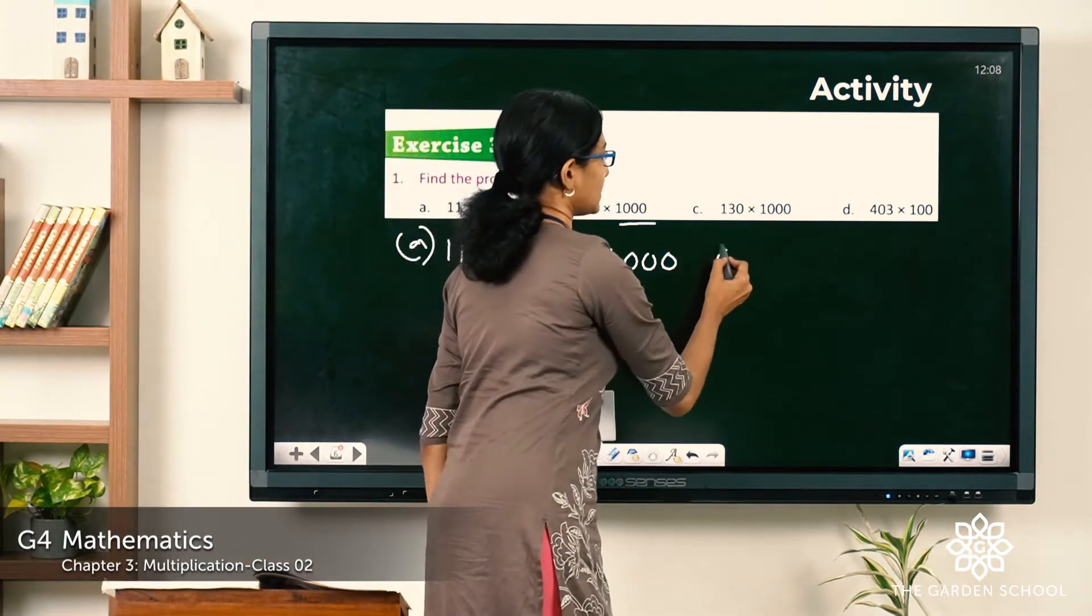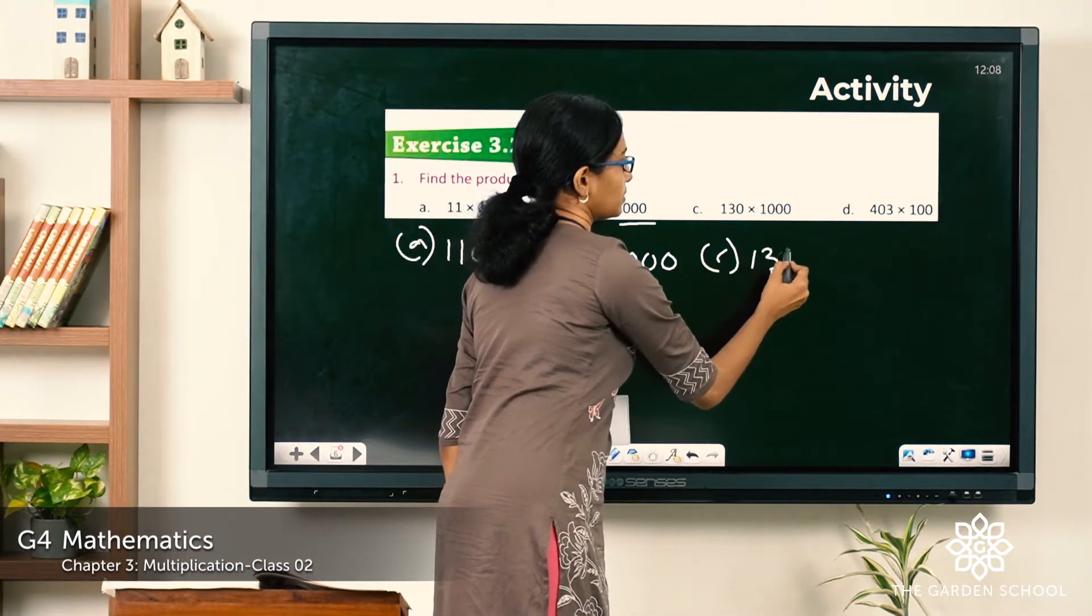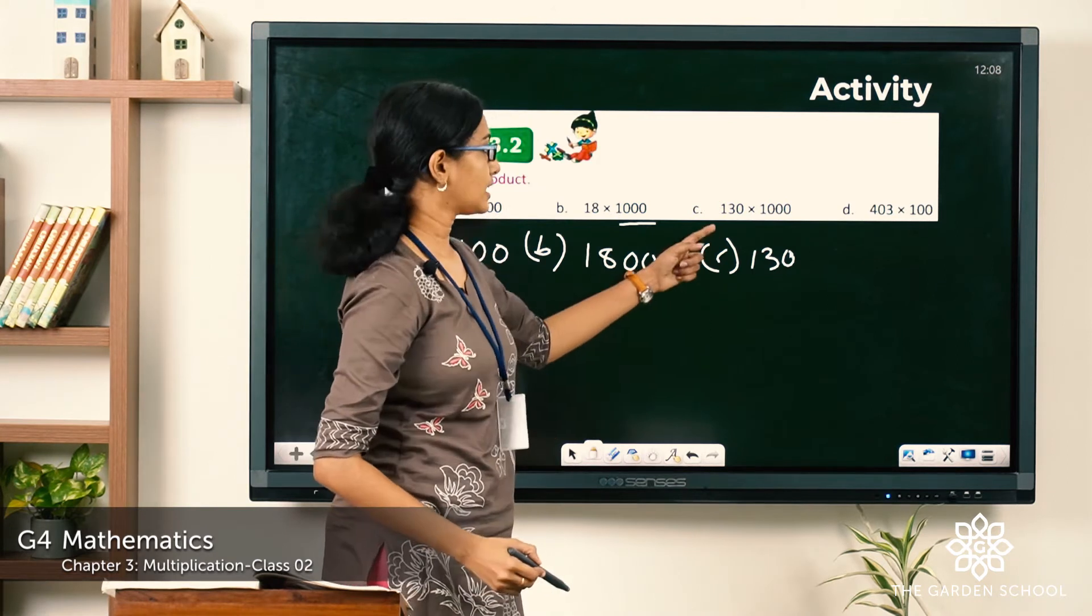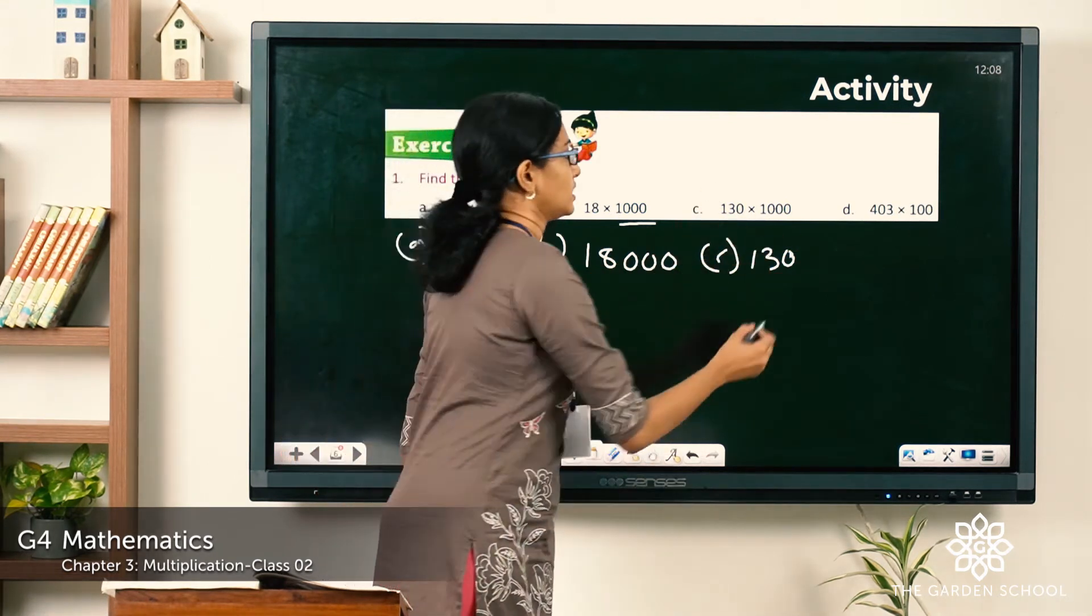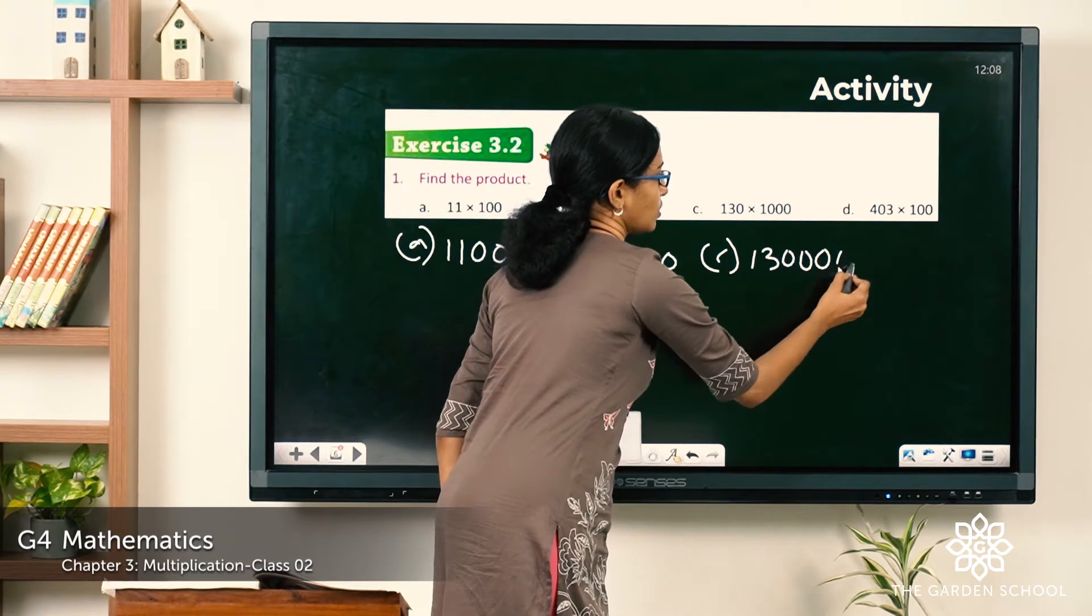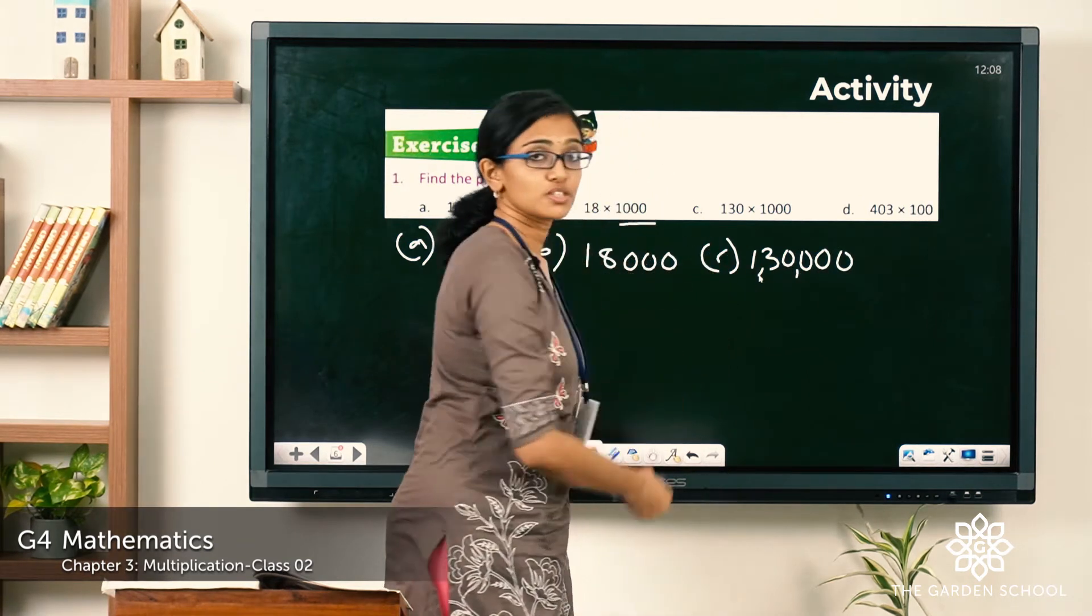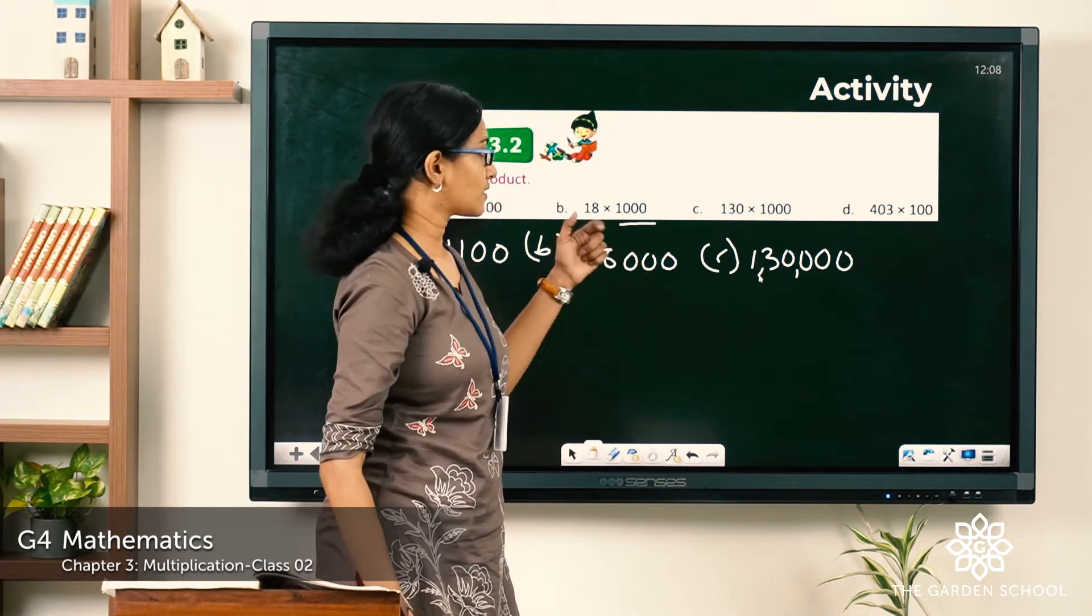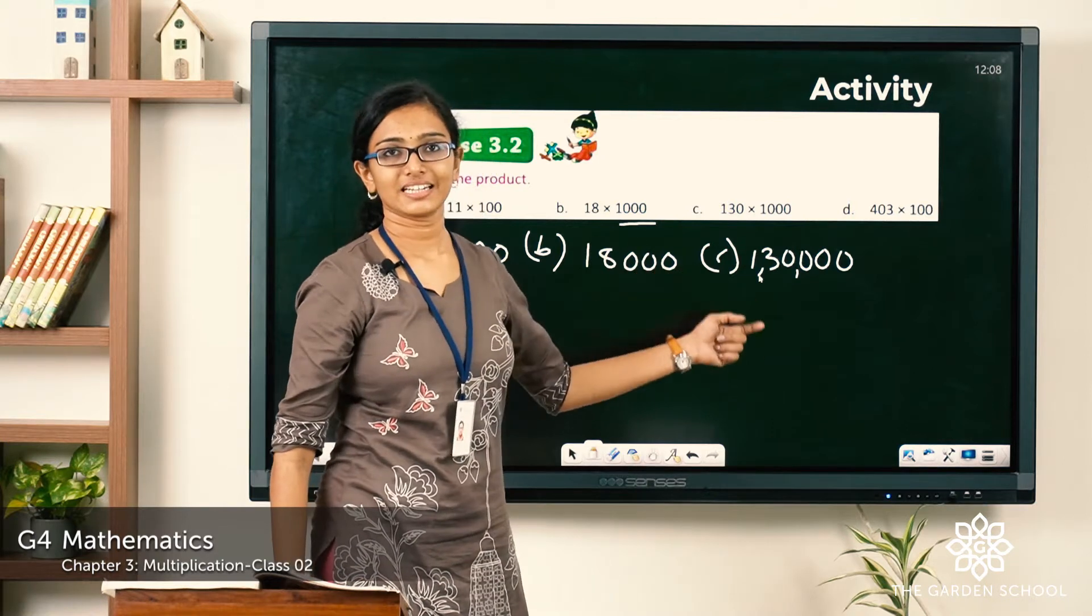Now question C. Here you have the given number as 130 into 1000. How many zeros to the right? Three zeros. And inserting commas in between to separate the periods, we have the product 130,000.